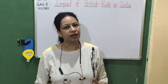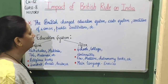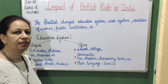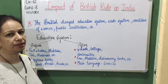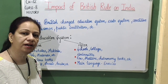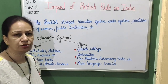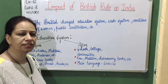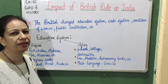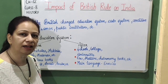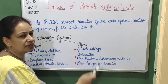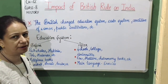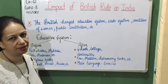What is the impact of British rule on India? In 1857, when the revolt came, the East India Company's rule ended. After the British rule, the British influenced all the aspects of Indian society. They changed each and every section — whether it was the education system, caste system, condition of women, public institutions, social reforms, etc.